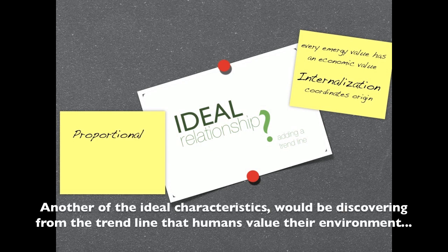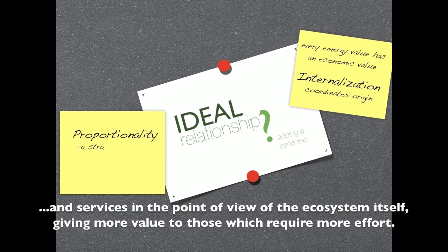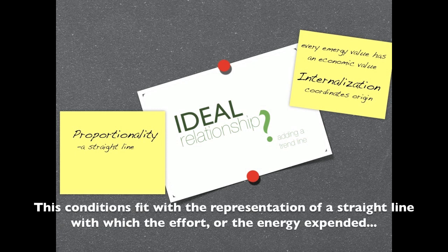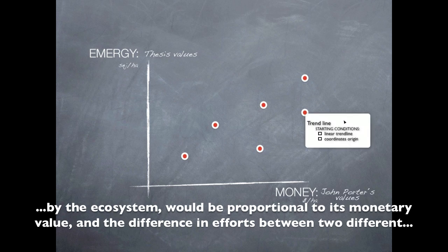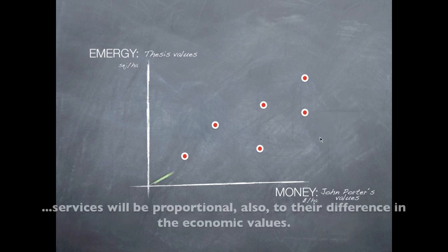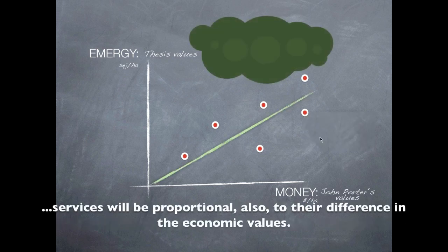Another of the ideal characteristics would be discovering from the trend line that humans value the environment and services in the point of view of the ecosystem itself, giving more value to those which require more effort. These conditions fit with the representation of a straight line, with which the effort or the energy expended by the ecosystem would be proportional to its monetary value, and the difference in efforts between two different services will be proportional also to the difference in the economic values.